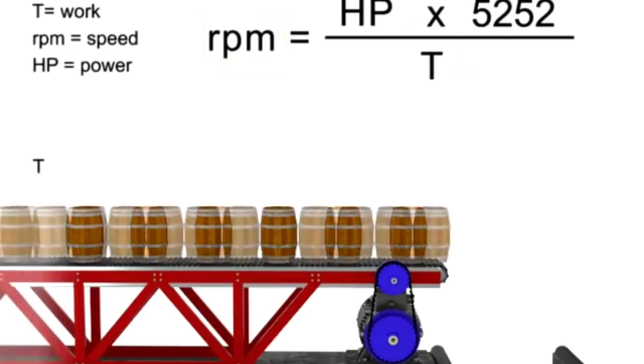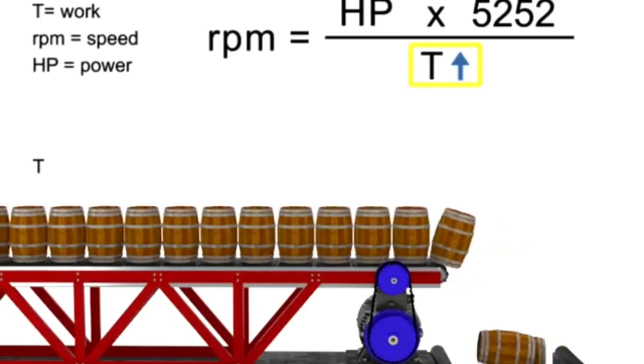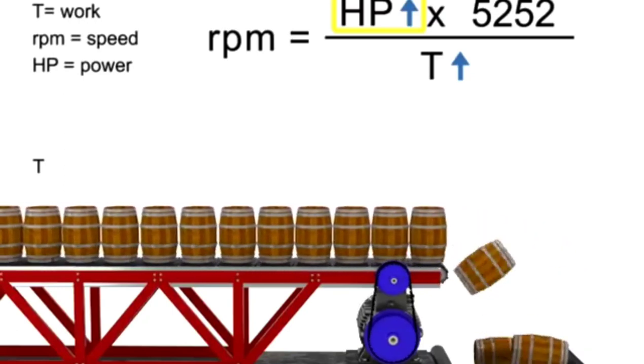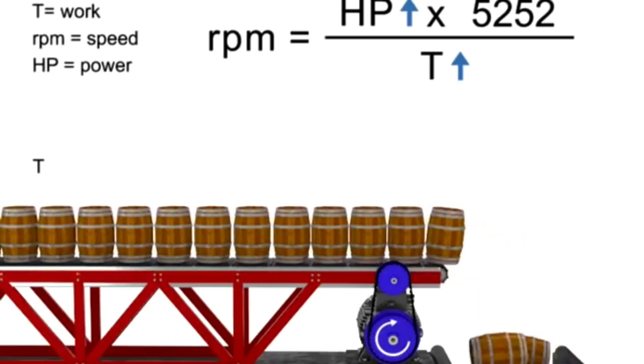Let's say we want production to increase but the speed of the conveyor to remain constant. If torque increases, horsepower also increases to compensate. This means a more powerful motor is needed to produce more torque at the same speed.